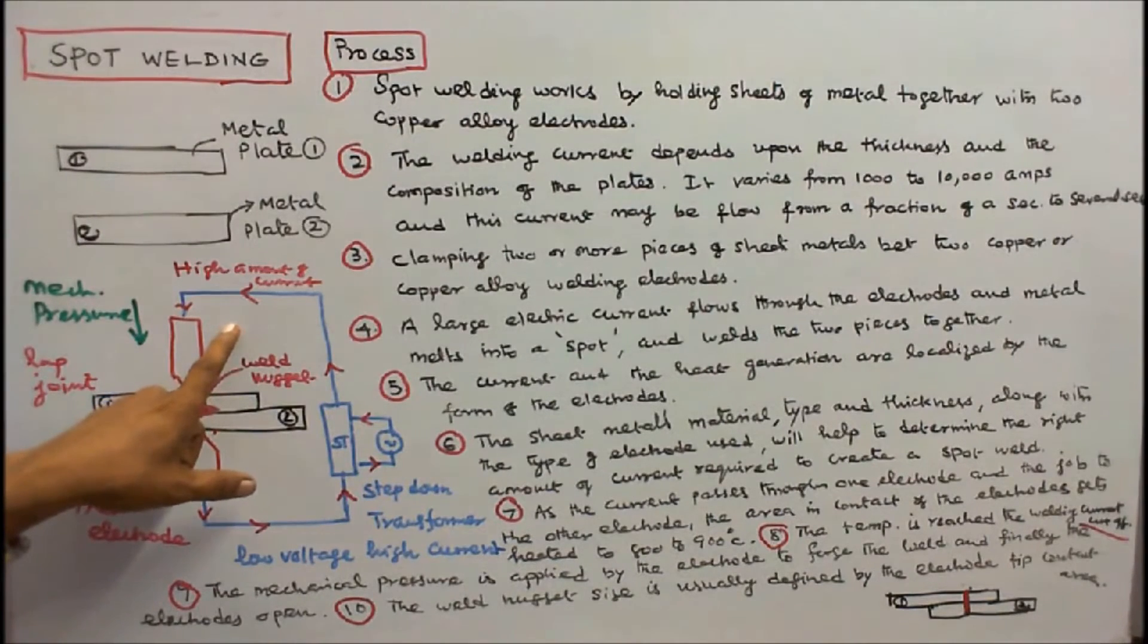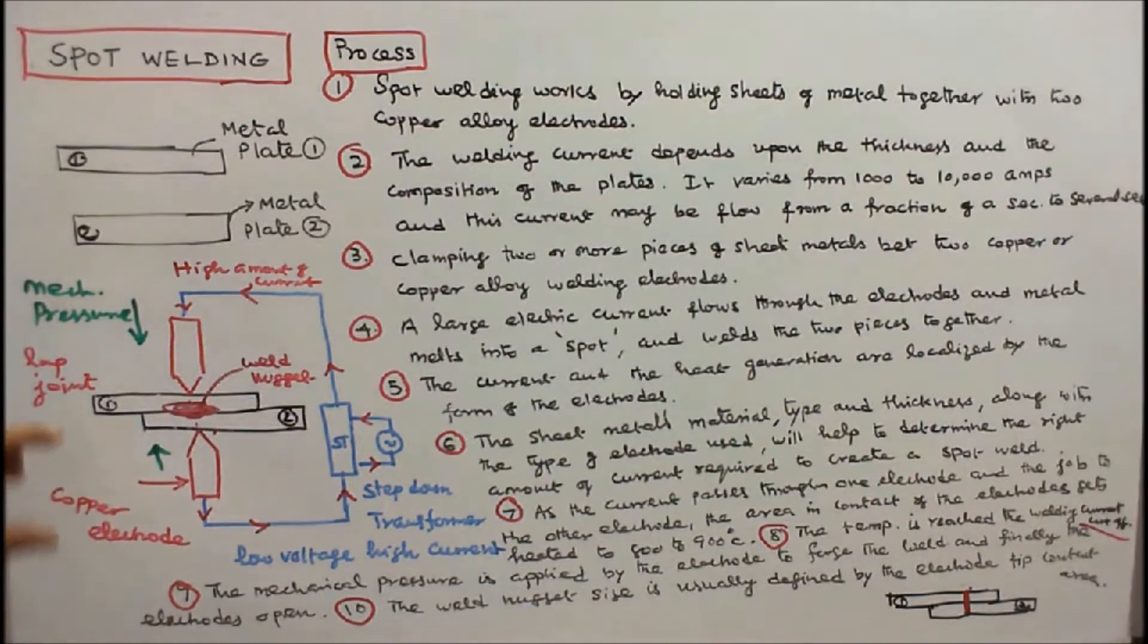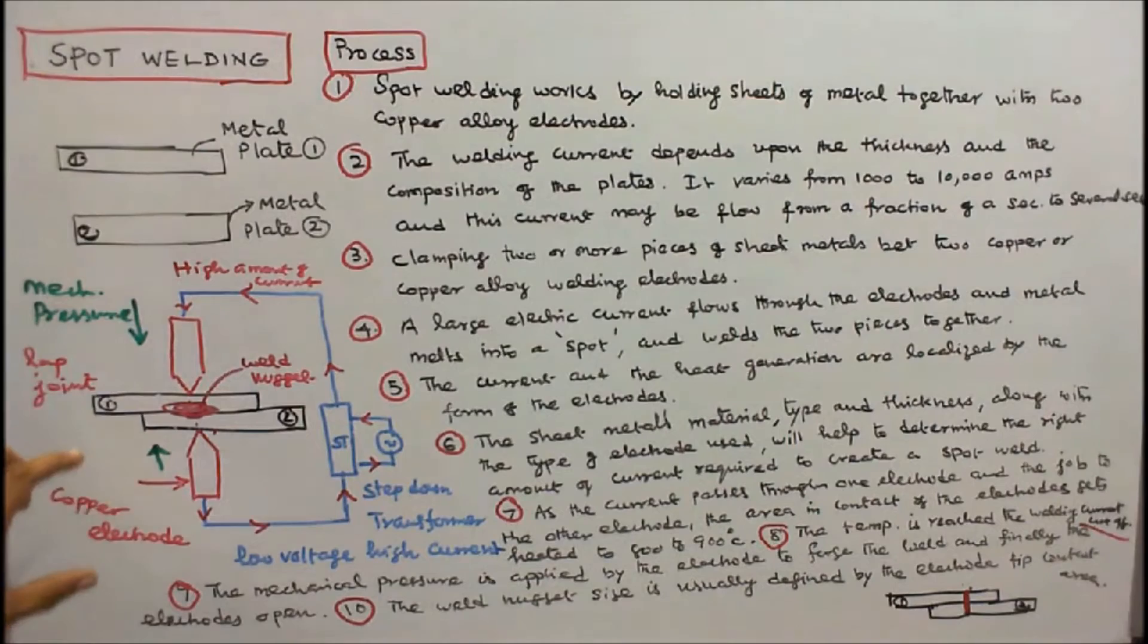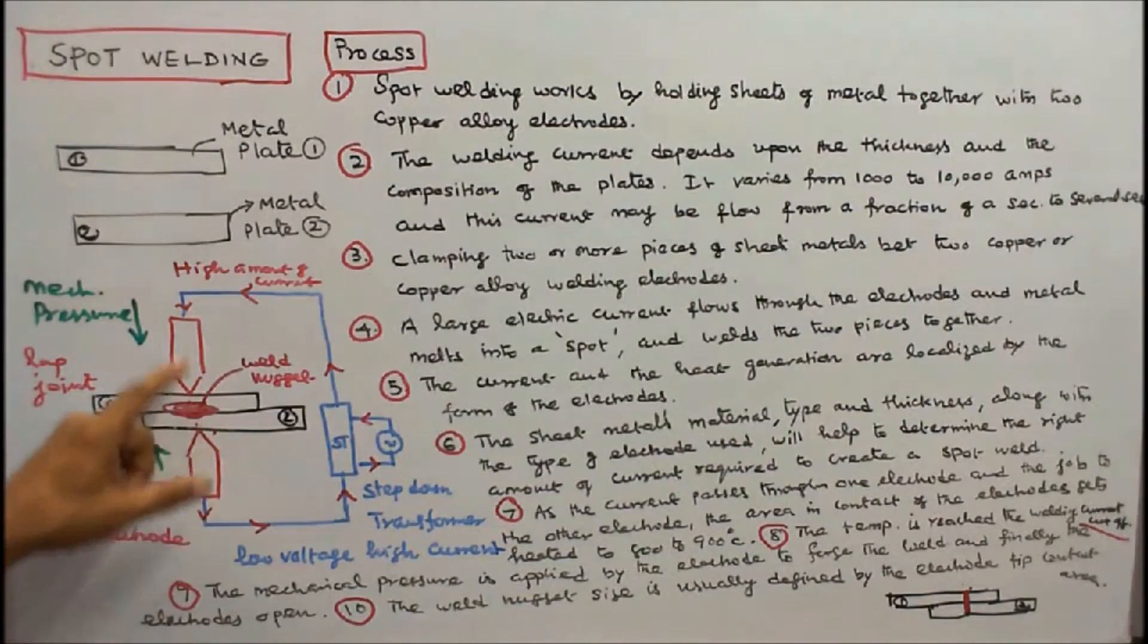This current may flow from a fraction of a second to several seconds. The process involves clamping two or more pieces of sheet metals between two copper or copper alloy welding electrodes.